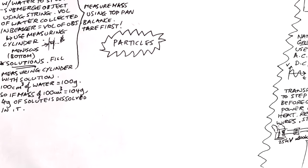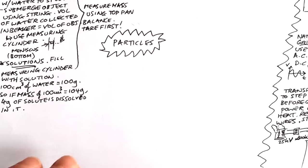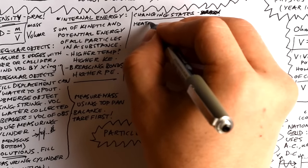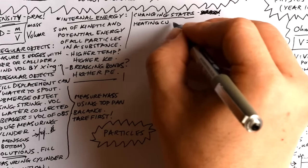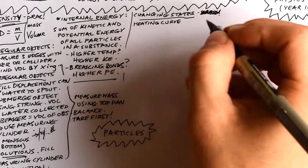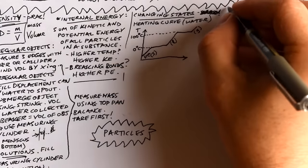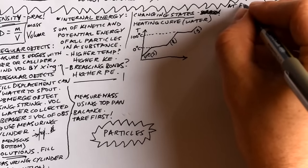Internal energy, the definition is, it's the sum or total of the kinetic and potential energy of all the particles in a substance. If something gets hotter, that means the particles have a higher kinetic energy, they're moving faster. If we're breaking bonds, that means the potential energy has increased.